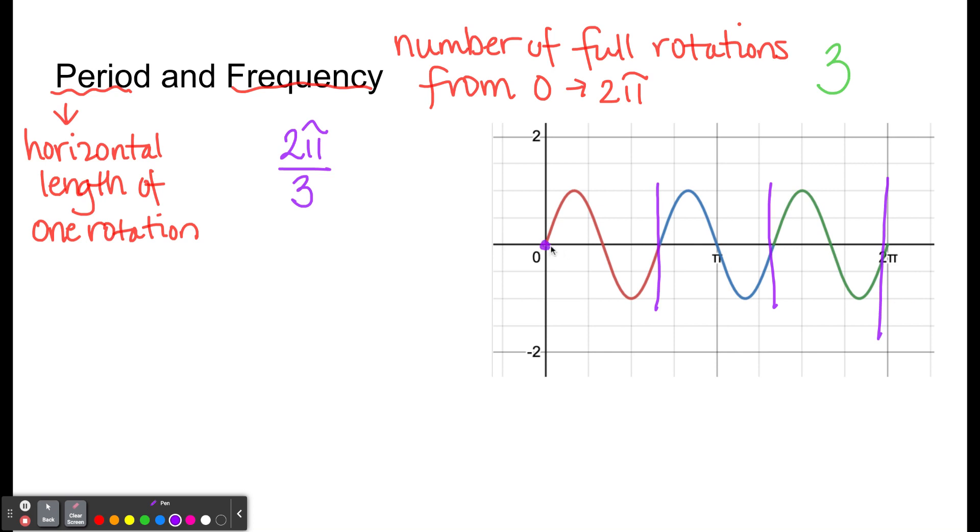So the length of one rotation, the distance horizontally from this start of this rotation to the end of this rotation was 2π over 3. Period is a distance, so that would be the same distance if you did any of the rotations. So from this point right here horizontally to this point right here is also 2π over 3.